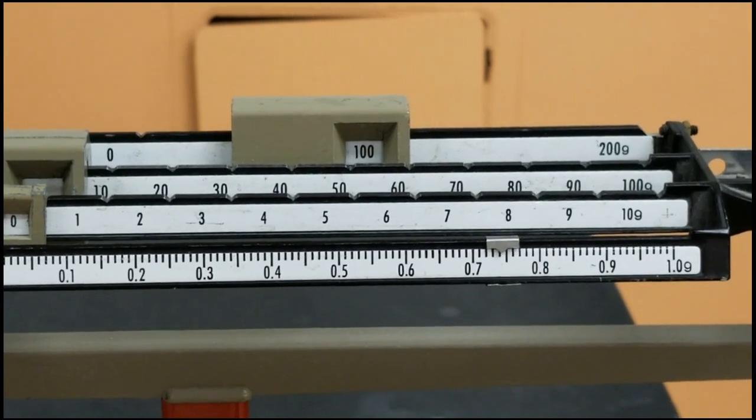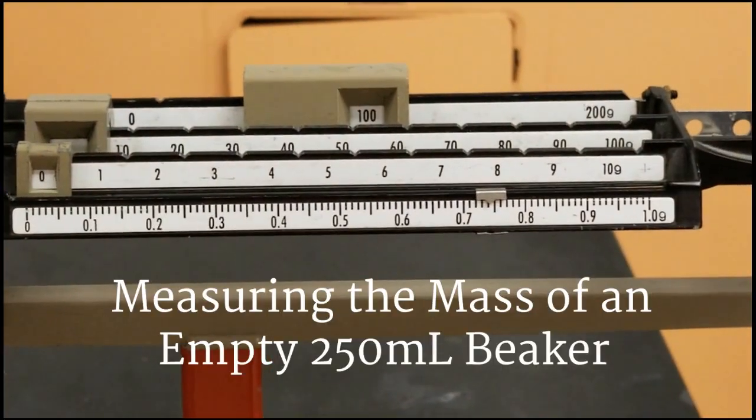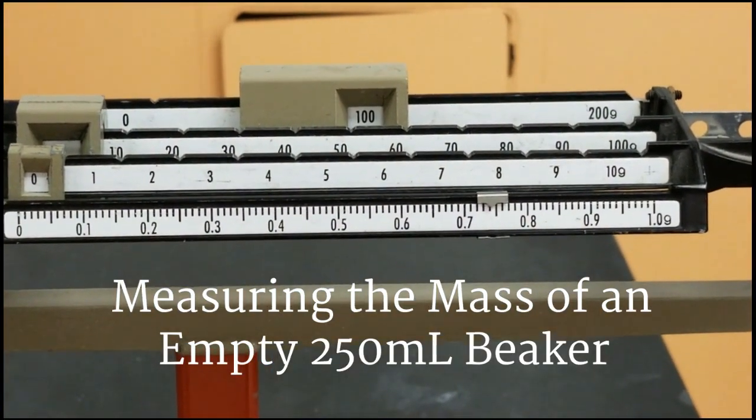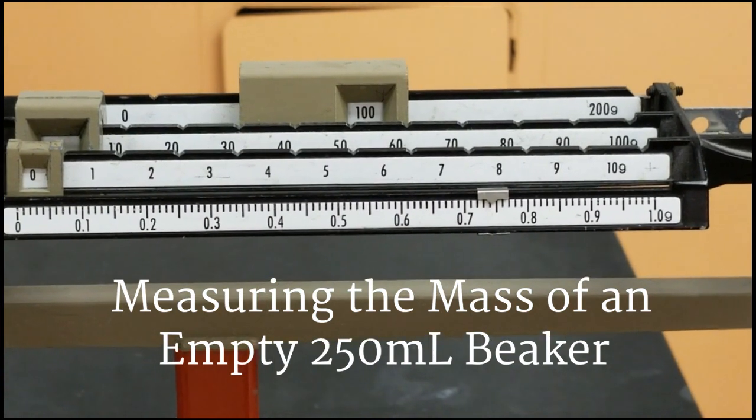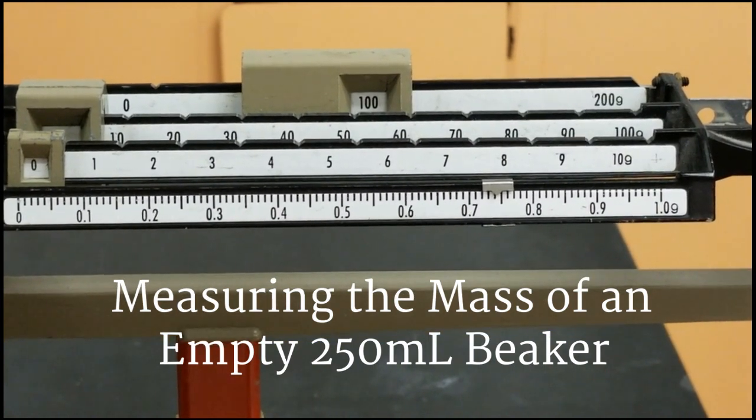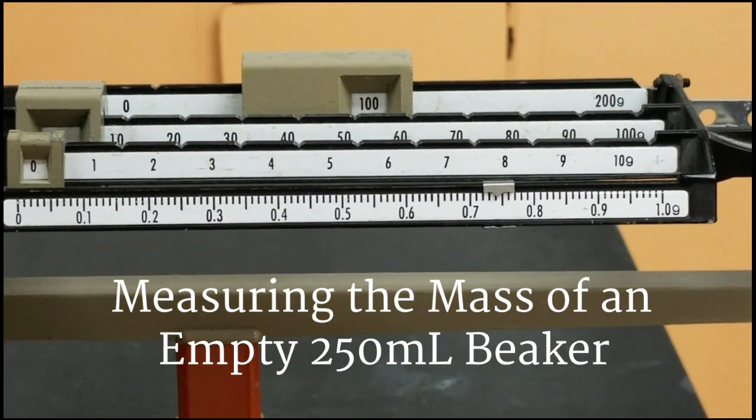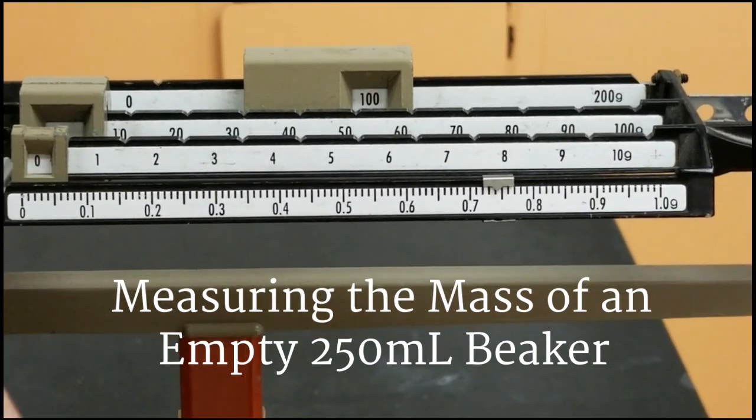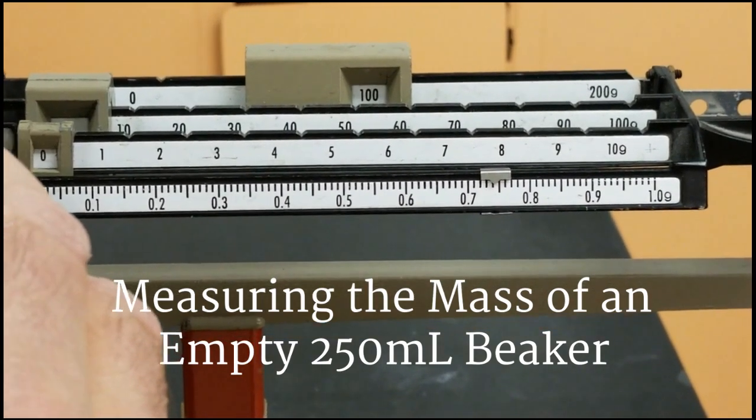Alright, we're starting off by taking the mass of an empty beaker. You can see what it is here. We're going to bump up the mass reading by between 0.2 and 0.3 grams. Then we're going to add powder slowly until it rebalances. Okay, then you can do that now.